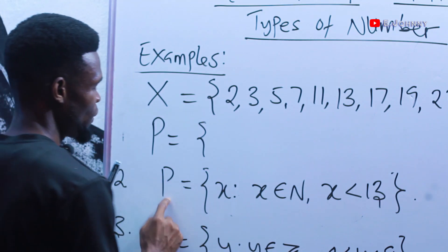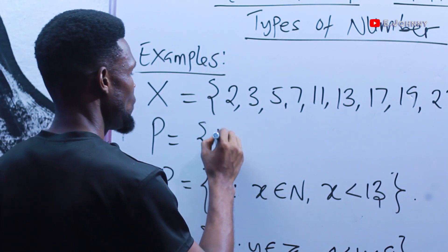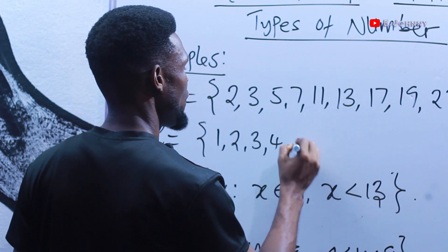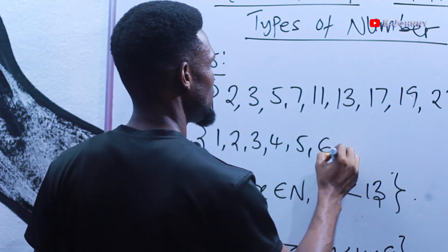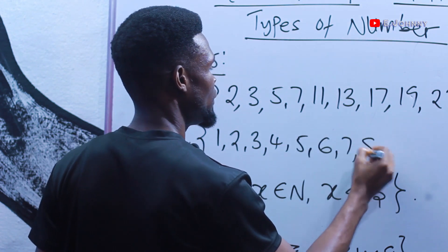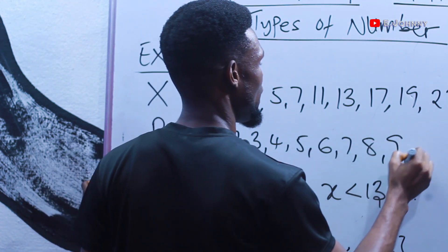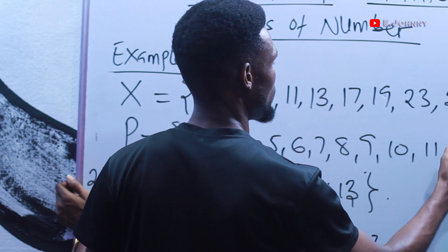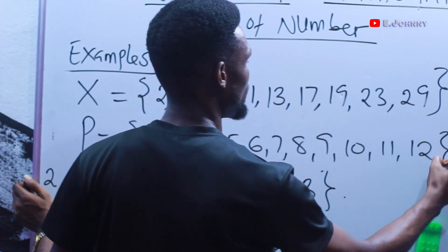So the elements of set P are: 1, 2, 3, 4, 5, 6, 7, 8, 9, 10, 11, and 12.